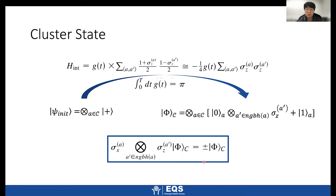This cluster state has the property of satisfying this eigenvalue equation. So the eigenvalue can be either plus one or minus one, depending on the configuration of qubit layers. Here NGBH means the neighborhood of qubit A.